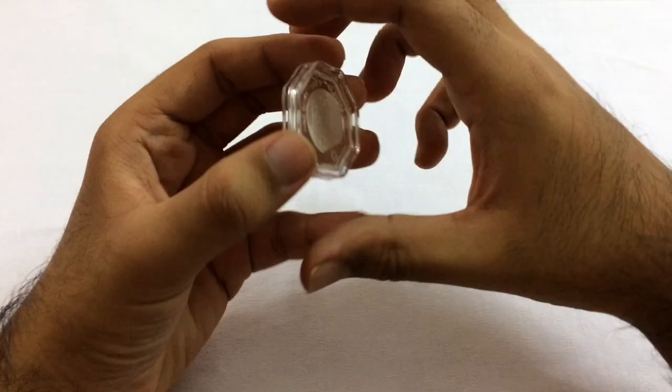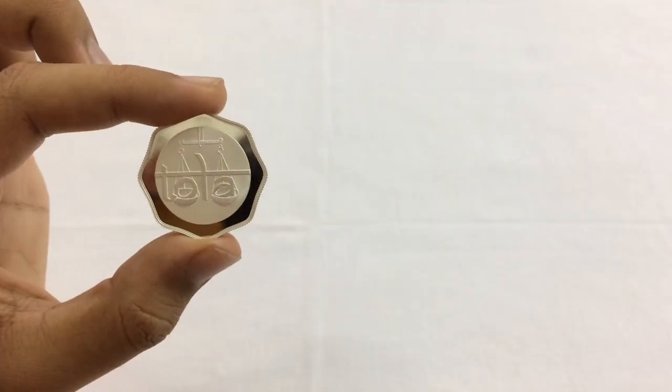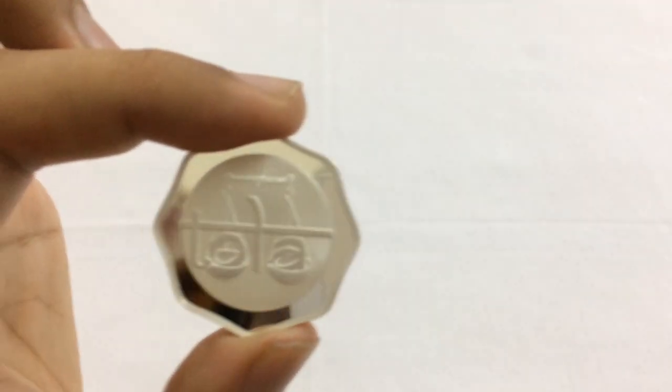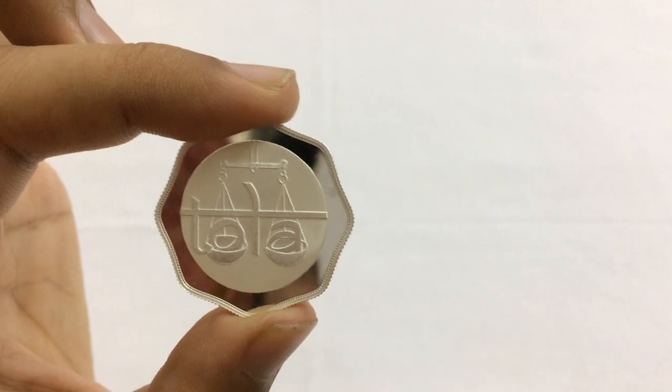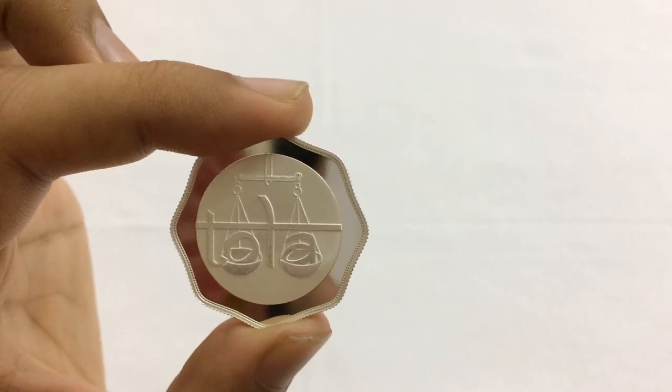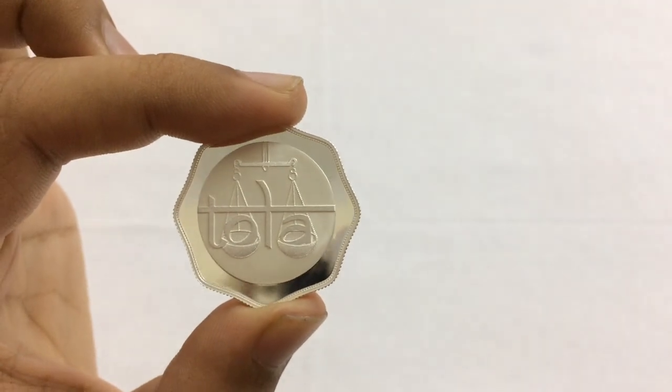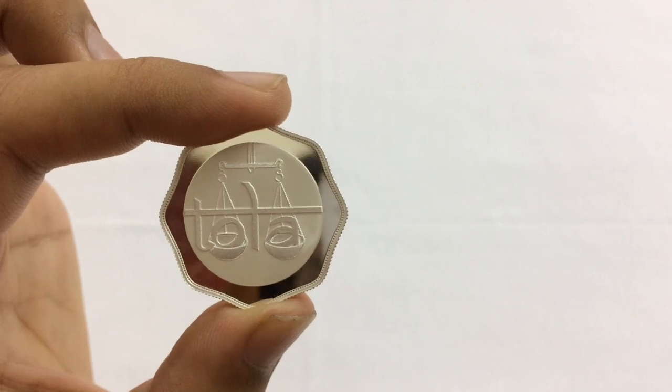Now let us see the coin in detail. The front has a traditional weighing balance. If you look closely, it spells out Tola, T-O-L-A, and O and A are in the measuring balances.